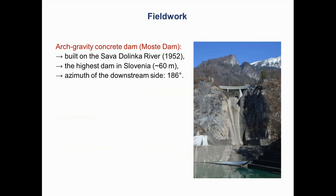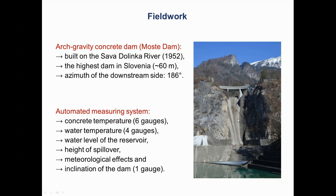The verification of hypotheses was carried out on the arch gravity concrete dam, the so-called Moste Dam, built on the Sava Dolinka River in 1952. At almost 60 meters high, it is the highest dam in Slovenia. The downstream side is oriented southwards. The automated measuring system consisted of concrete temperatures, water temperatures, water level of the reservoir, height of spillover, meteorological effects, depths, and inclination of the dam.